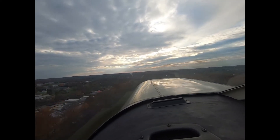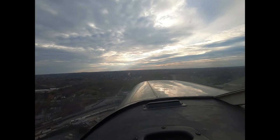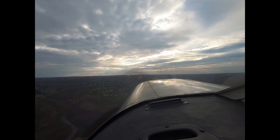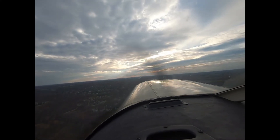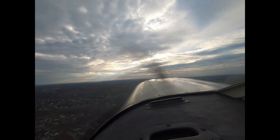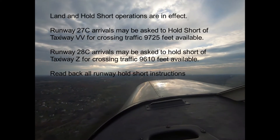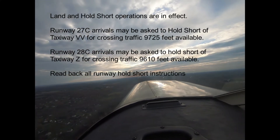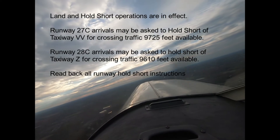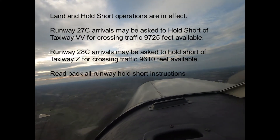O'Hare International Airport ATIS Information Delta: wind 240, visibility 10, temperature 16, altimeter 29.95. Arrivals expect vectors ILS runway 27 center approach. Visual approach runway 27 center and right. Visual approach runway 28 center. Land and hold short operations are in effect. Runway 27 center arrivals may be held short of taxiway Victor Victor for crossing traffic — 9,725 feet available. Runway 28 center arrivals may be held short of taxiway Zulu for crossing traffic — 9,610 feet available.